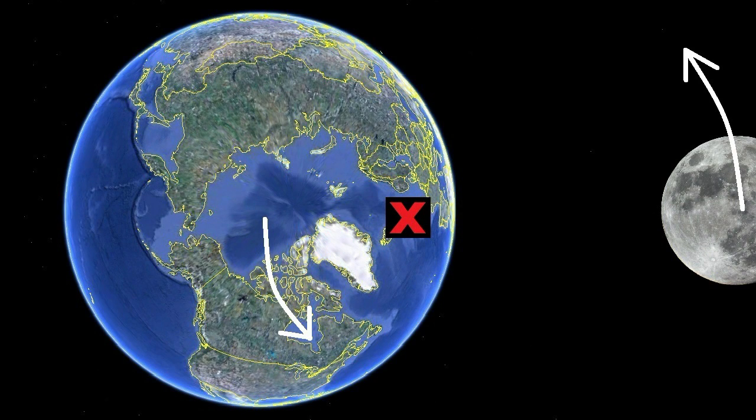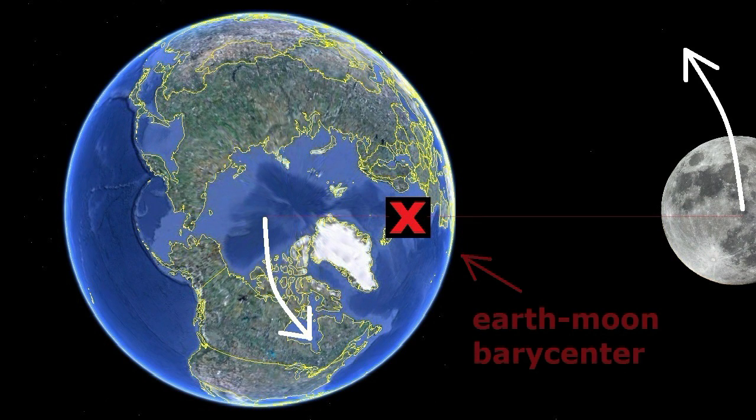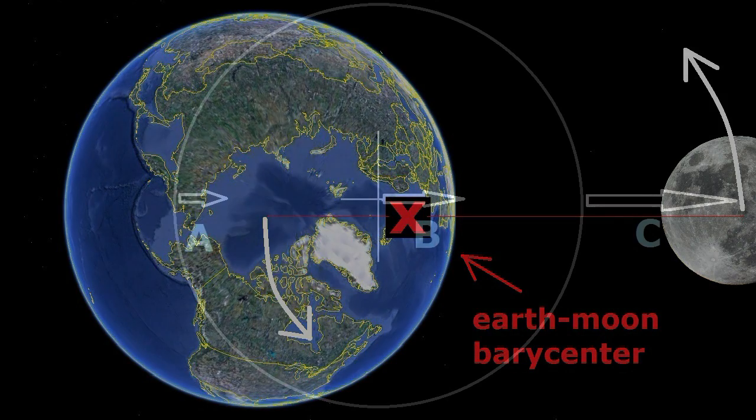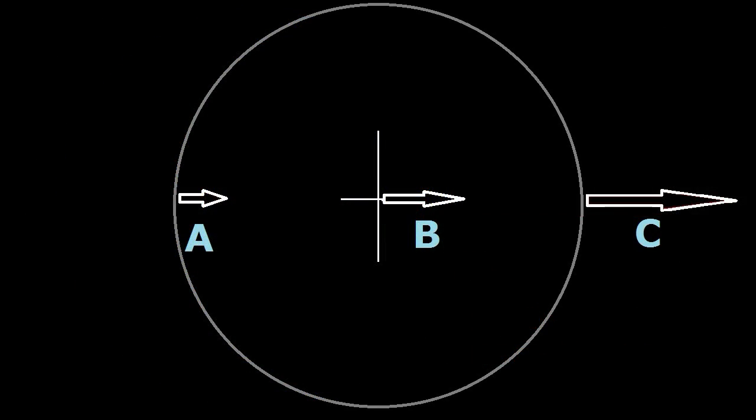Now consider that the earth's center is in free fall around the earth-moon barycenter. That's the center of mass of the earth-moon system. It's about 1700 kilometers below the earth's surface because the earth is so much more massive than the moon. To show that the earth's center is in free fall, we cancel out the moon's gravitational vector at the earth's center by adding an equal but opposite vector.